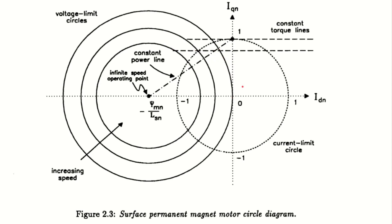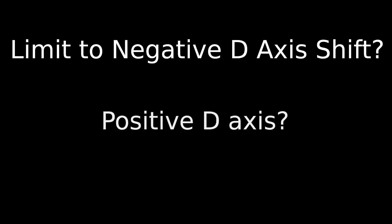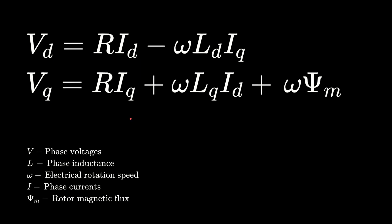Okay, now that we understand how field weakening works and we talked about the misconception, some questions might come to mind. First, is there a limit to how much we can shift the stator current towards the negative D axis for field weakening to still work? And why don't we shift the stator current towards the positive D axis?